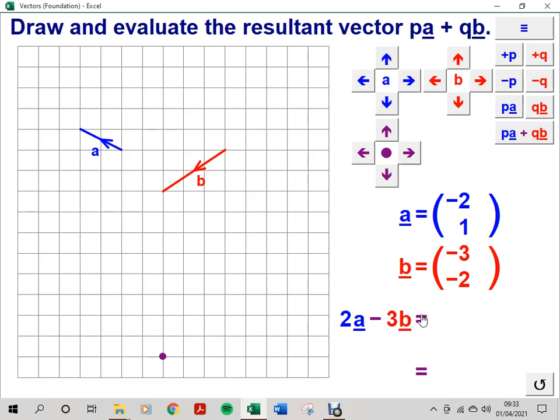My next line of working evaluates the resultant vector 2A subtract 3B within a single pair of brackets. The new blue values are two times or double each original blue value, and the new red values are three times or triple each original red value, and I place a subtract sign in between.